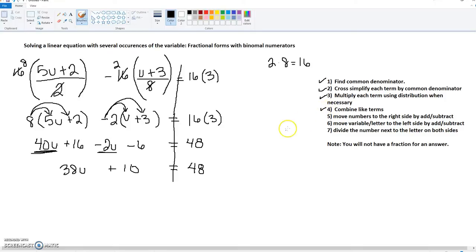The next step is to move the numbers to the right side. Here's our single number that we need to move. Since it's positive, that means we need to subtract. So 48 minus 10 gets us 38, and on this side we're bringing down the 38u.